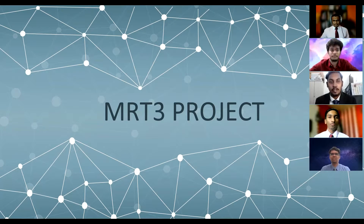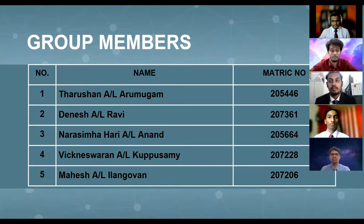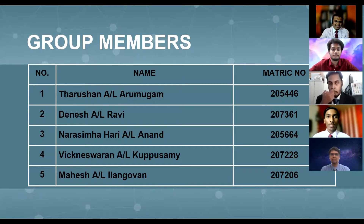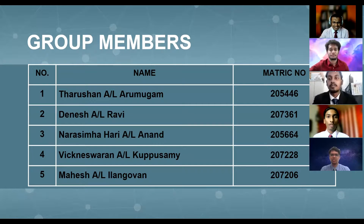My name is Mice Anarki Longoven with a matrix number of 207206. My name is Tarushan son of Arumugam with a matrix number of 205446. My name is Dinesh Savi and my matrix number is 207361. My name is Narashima Haryana Lakianya and my matrix number is 205664. My name is Mikneeshwaran Anarki Kukhusamit and my matrix number is 207228.